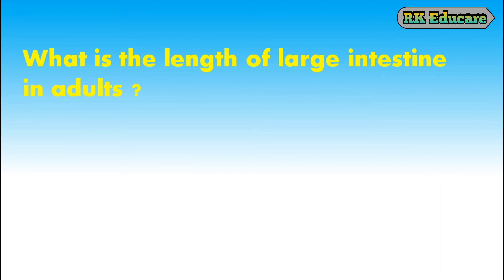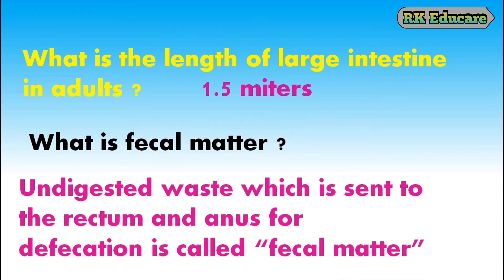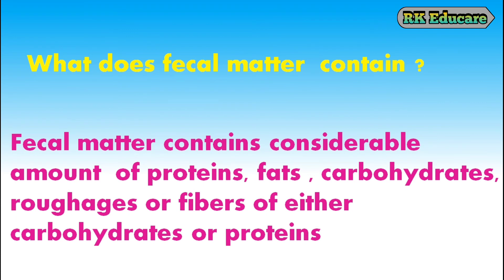What is the length of the large intestine in adults? It is about one and a half meters. What is fecal matter? Undigested waste which is sent to the rectum and anus for defecation is called fecal matter. What does fecal matter contain? Fecal matter contains considerable amounts of proteins, fats, carbohydrates, roughages or fibers of either carbohydrates or proteins.